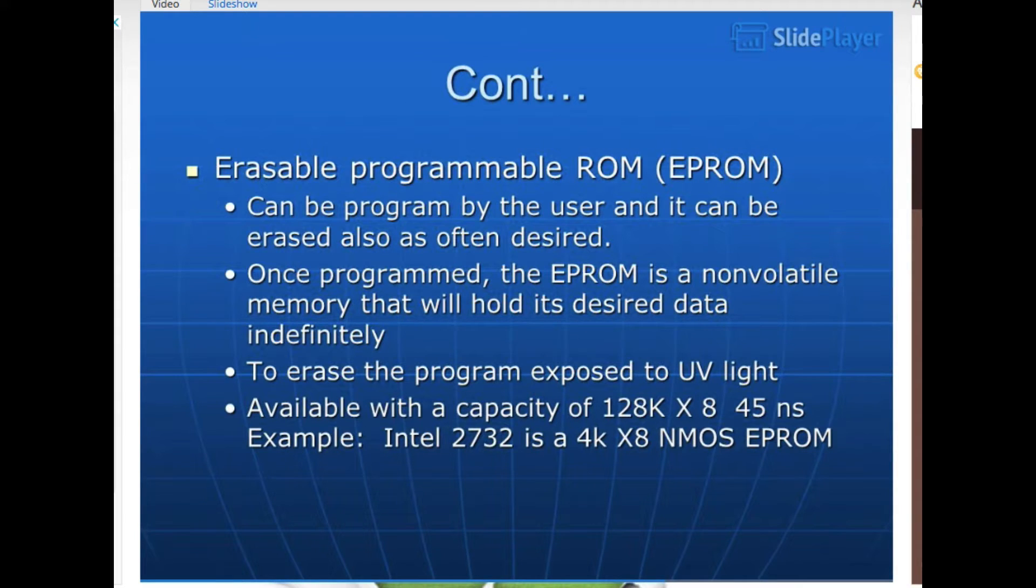Continuation. Erasable programmable ROM, EPROM, can be programmed by the user and it can be erased also as often desired. Once programmed, the EPROM is a non-volatile memory that will hold its desired data indefinitely. To erase the program, exposed to UV light. Available with a capacity of 128K by 8, 45 nanoseconds. Example: Intel 2732 is a 4K by 8 NMOS EPROM.